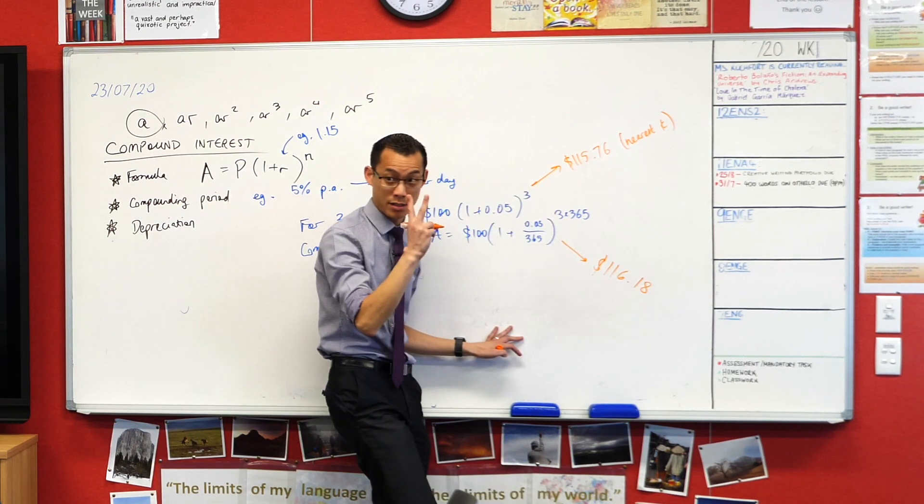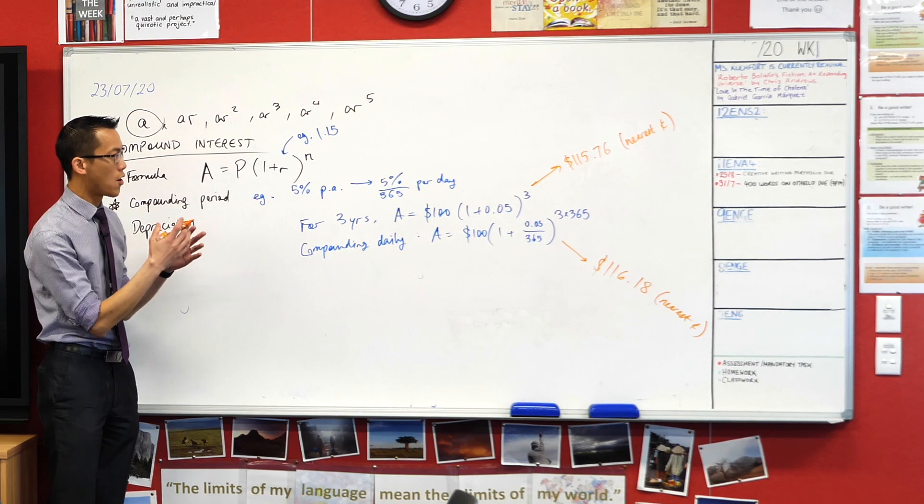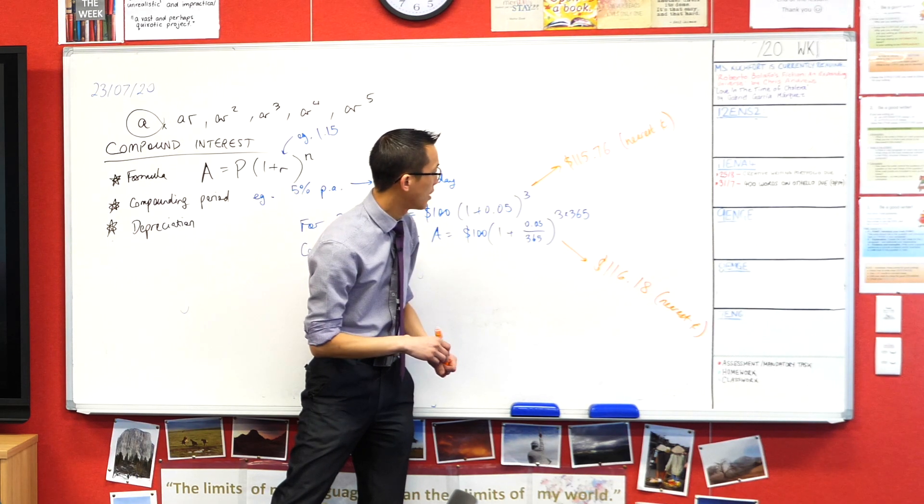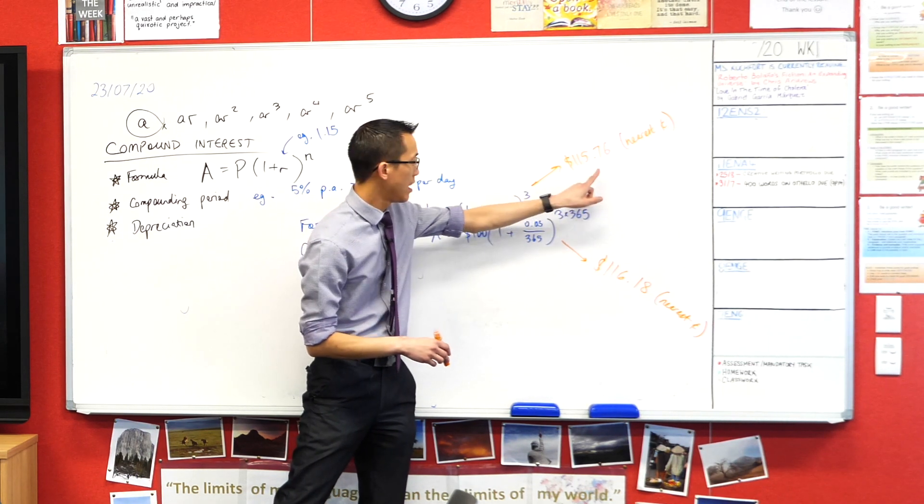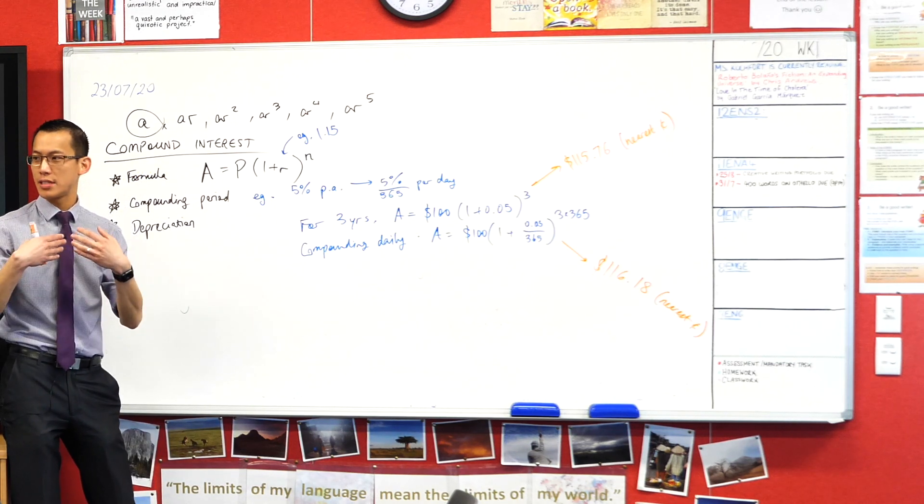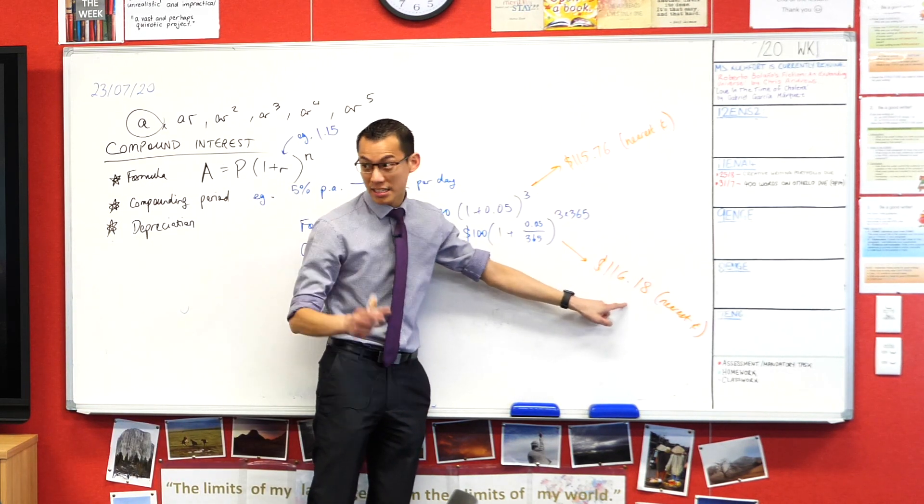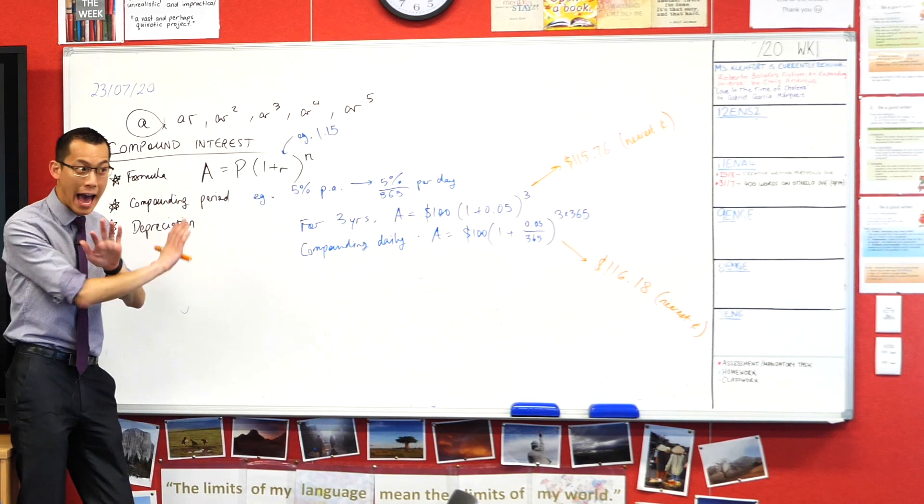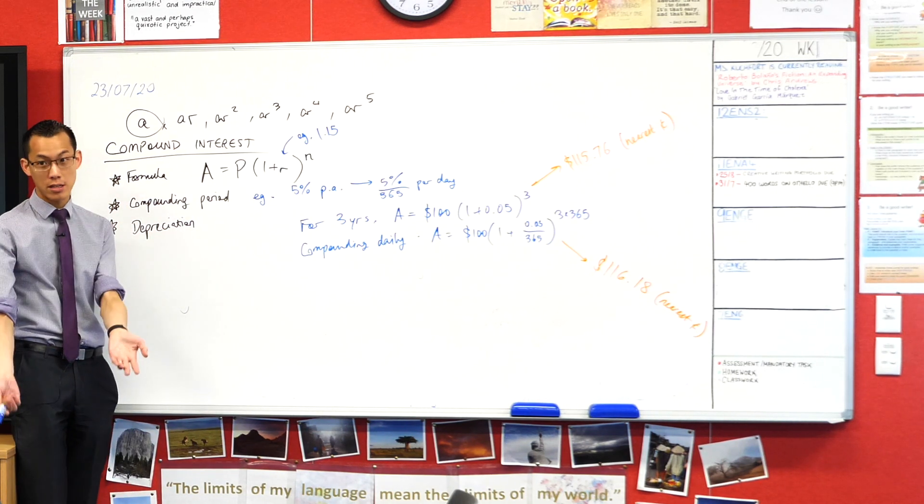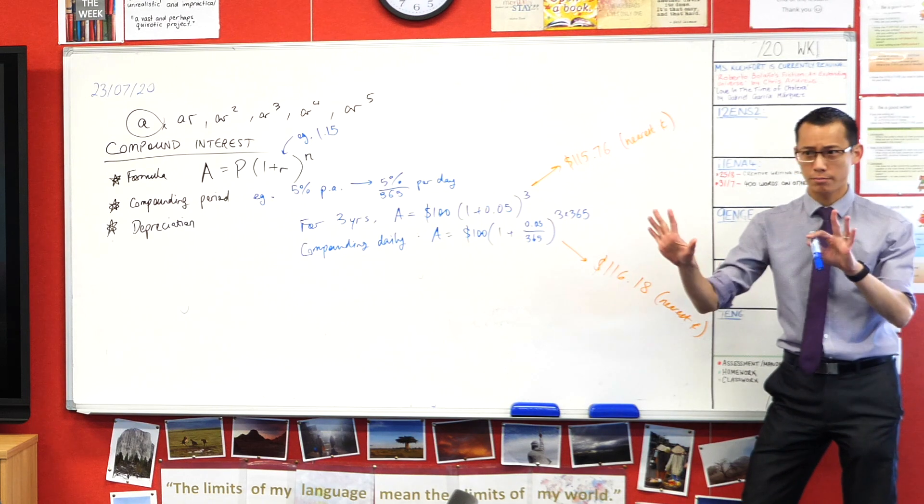The other number? $116.18. We bake into this process approximation because we're dealing with dollars and cents, so I'm going to round this to the nearest cent. We went from yearly to daily and the difference ended up being about 42 cents. But when we think about the difference in the actual interest calculated - $15.76 versus $16.18 - it's actually a fair proportion. The interest rate hasn't changed at all, it's just how frequently we calculate it. Please watch very carefully when you get given questions - they'll specify the compounding period and that will change the numbers you put into the formula.